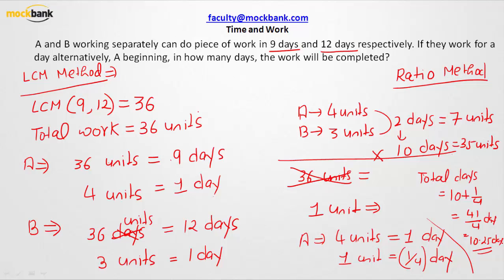We need to find the multiple of 7 which is closest to 36, that is 35 units. So in order to finish 35 units of work, they together will be taking 10 days, and A must have worked for 5 days and B must have worked for 5 days.